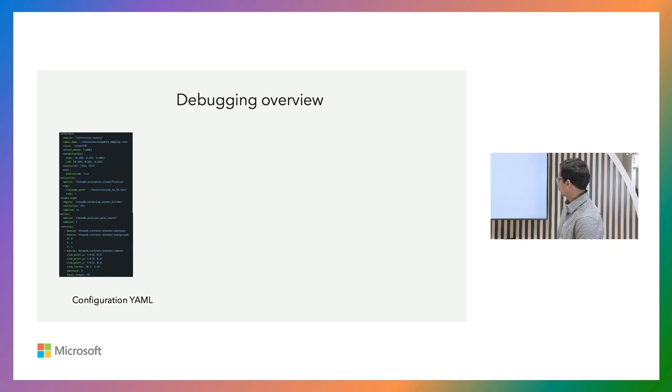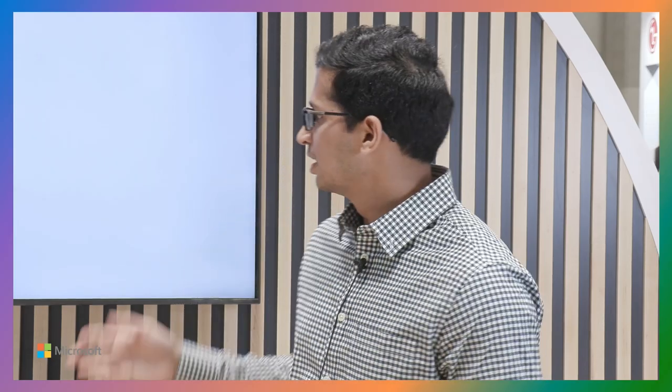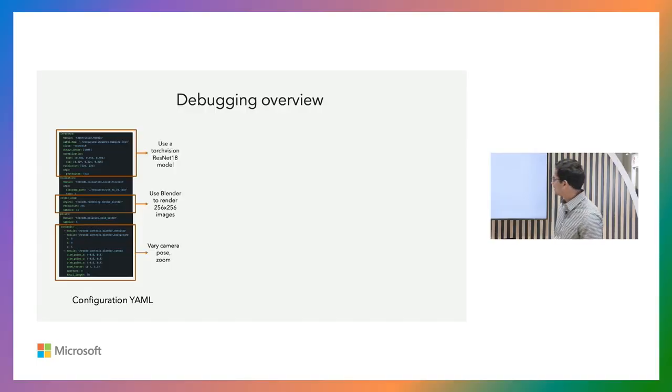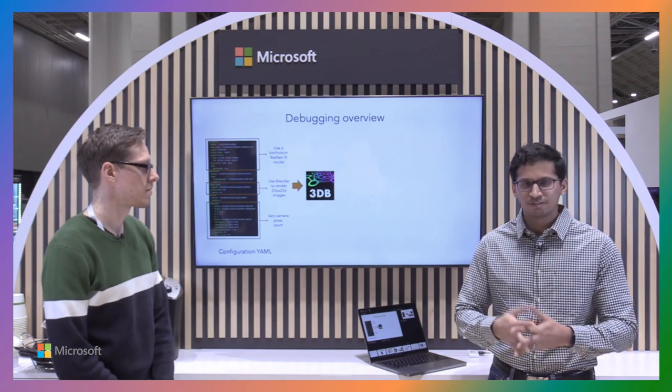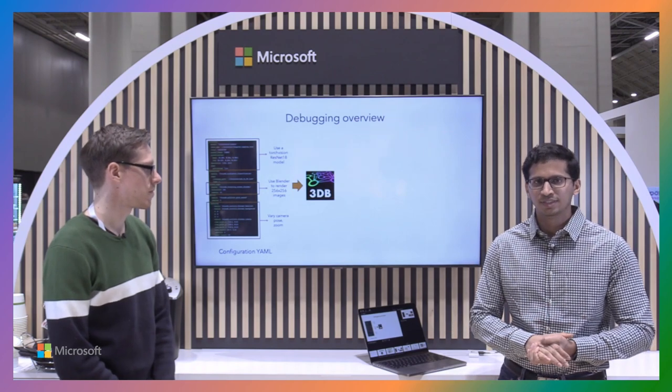A quick overview of how we set this up in the workflow: 3DB is very easily configurable and extensible. Most of it is operated through a YAML file. For instance, in this configuration, let's say we are interested in benchmarking the typical ImageNet pre-trained TorchVision ResNet-18 model for classification. Then we pick Blender as our backend because that's where we'd render and generate all of this synthetic imagery. I can also specify the parameters that I'm interested in changing—I would want to understand the effects of the camera pose, camera zoom. I could specify some things like that and we can define a certain kind of policy, like do we want to do a grid search or a random search over different parameters.